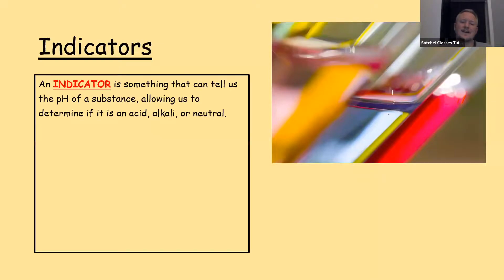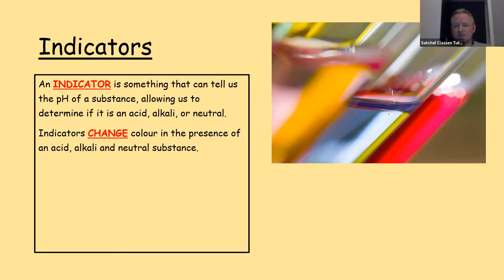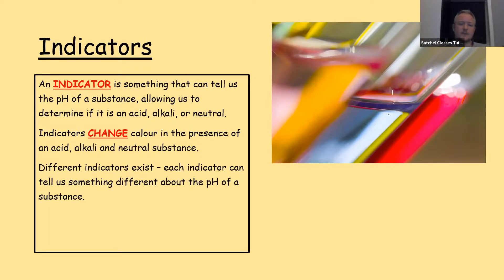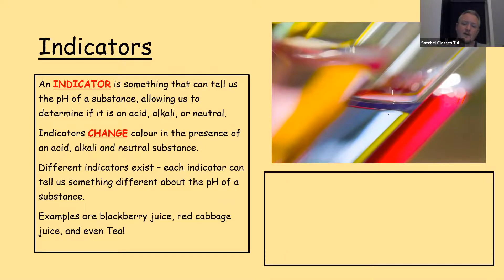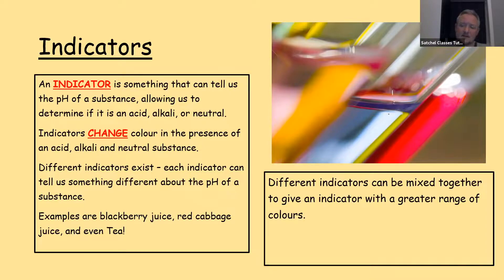An indicator is a plant dye or a substance that can tell us the pH, or the acidity or alkalinity, of a substance. This allows us to determine if it is an acid, an alkali, or if it's neutral. Indicators change colour in the presence of an acid, an alkali, or a neutral substance. Different types of indicators exist — for example, blackberry juice, red cabbage juice, even tea can be used to indicate whether something is an acid or an alkaline. Different indicators can be mixed together to give an indicator with a greater range of colour changes.